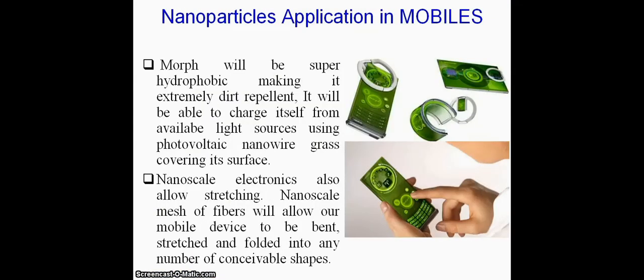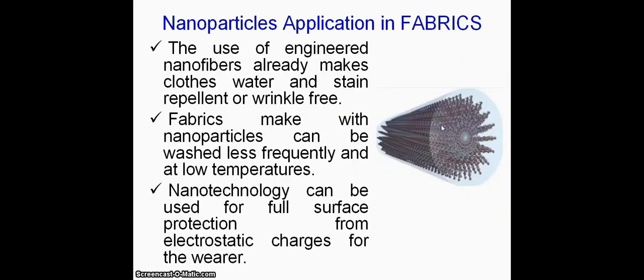In mobile phones, the morph technology or morph concept will be super hydrophobic, making it extremely dirt repellent. It will be able to charge itself from available light sources using photovoltaic nanowire and nanowire arrays covering its surface. Nanoscale electronics allow stretching. Nanoscale mesh of fibers will allow our mobile devices to be bent, stretched, and folded in any number of conceivable shapes.